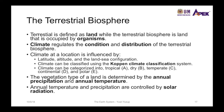The climate regulates the condition and the distribution of the terrestrial biosphere, while the climate can be influenced by the latitude, the altitude, and the land-sea configuration. We can classify the climate into five main categories using the Köppen climate classification system: tropical (A), dry (B), temperate (C), continental (D), and polar (E).